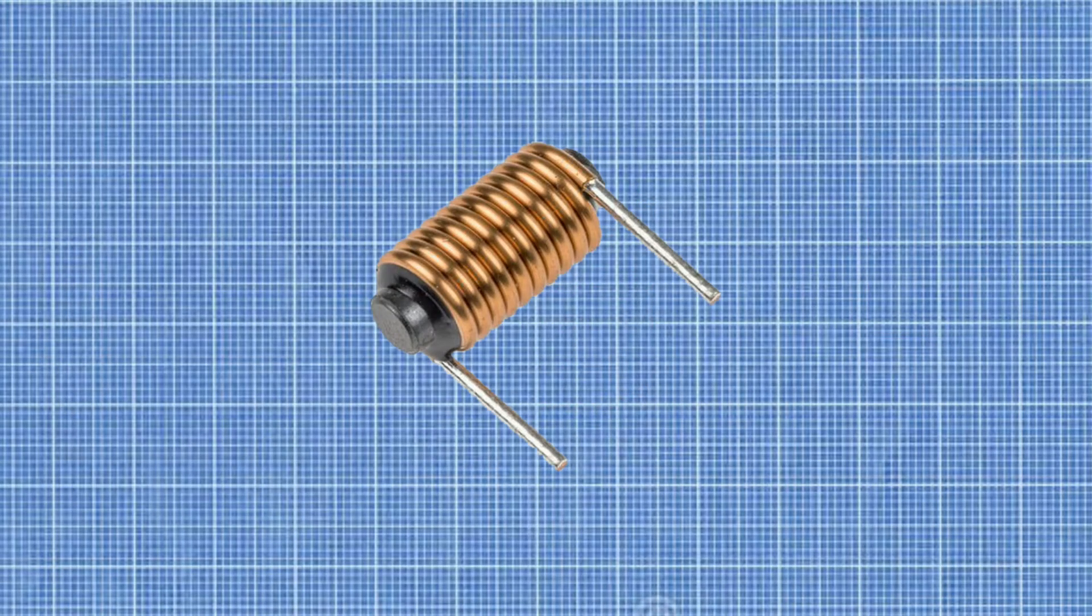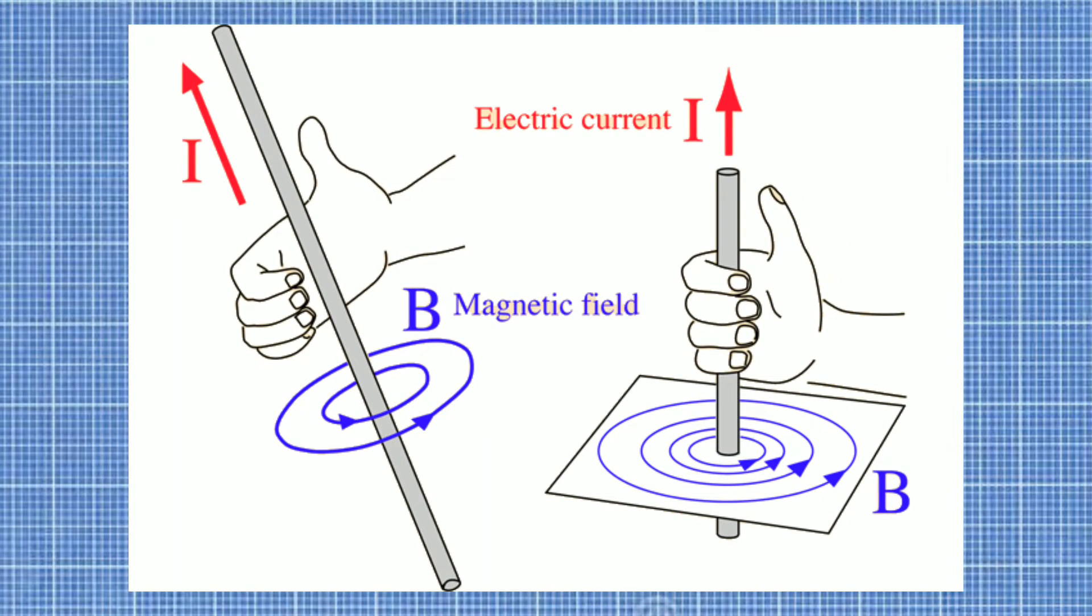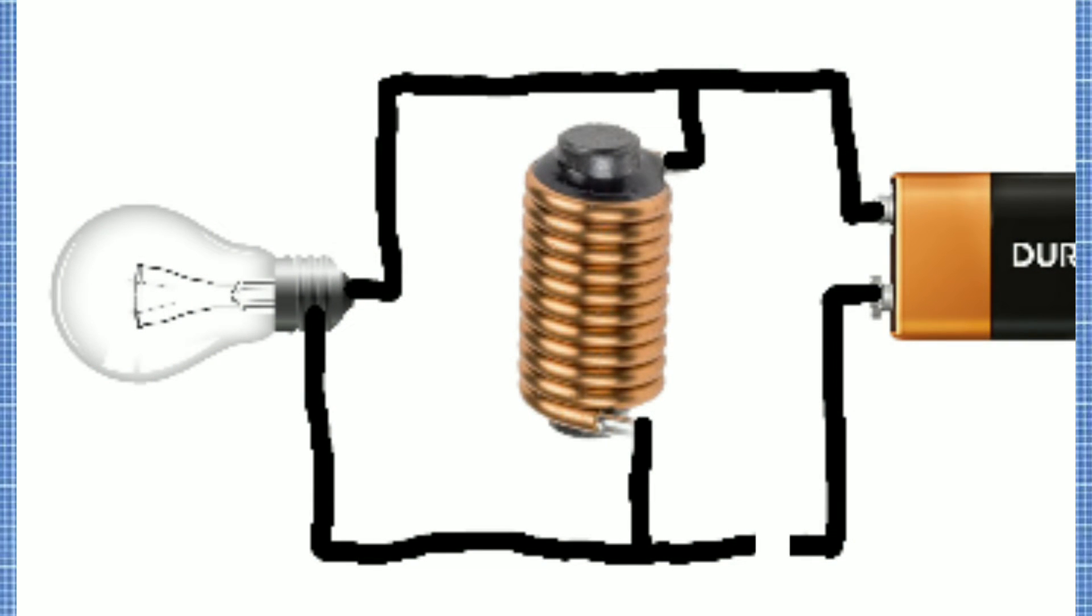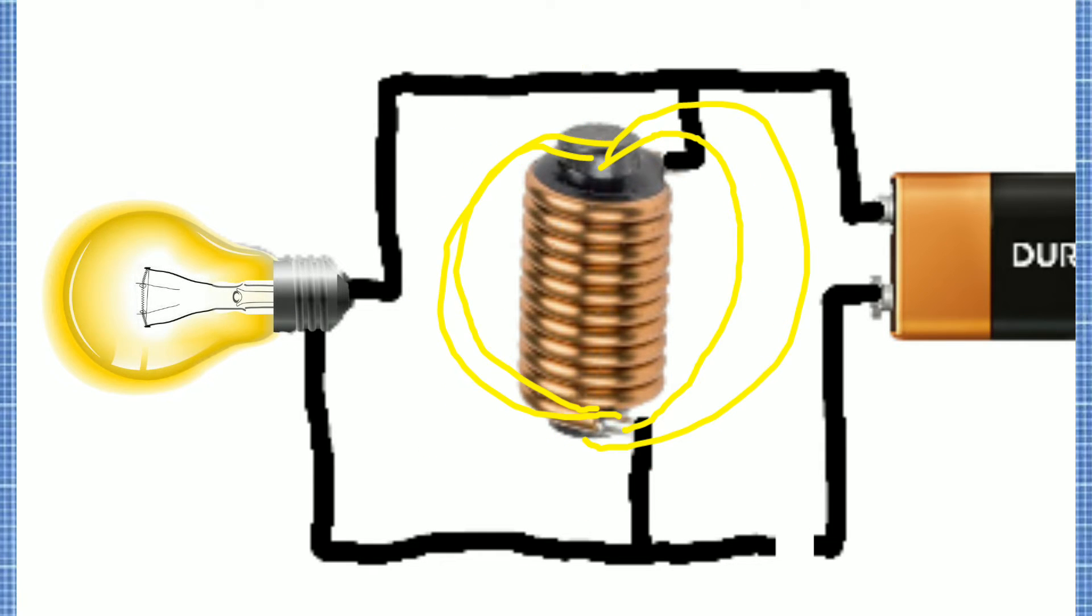So why does inductor work like that? As you all know, when we pass current through the wire, it creates a magnetic field around it. If we wound the wire in this manner, the magnetic field becomes much stronger. When the circuit is off, then there is no magnetic field. When we power on, the magnetic field starts increasing and stores energy. When the power is cut, the magnetic field begins to collapse, and so the magnetic field will be converted into electrical energy and push the electrons around.